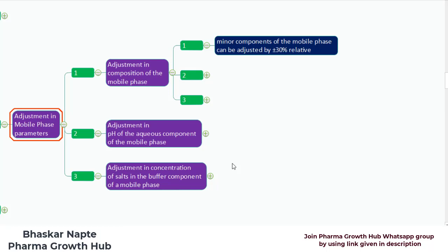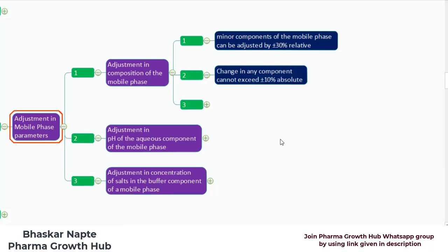According to USP General Chapter 621, the minor components of the mobile phase can be adjusted by plus or minus 30% relative to its original composition. The second important point is the change in any component cannot exceed plus or minus 10% absolute of its composition.